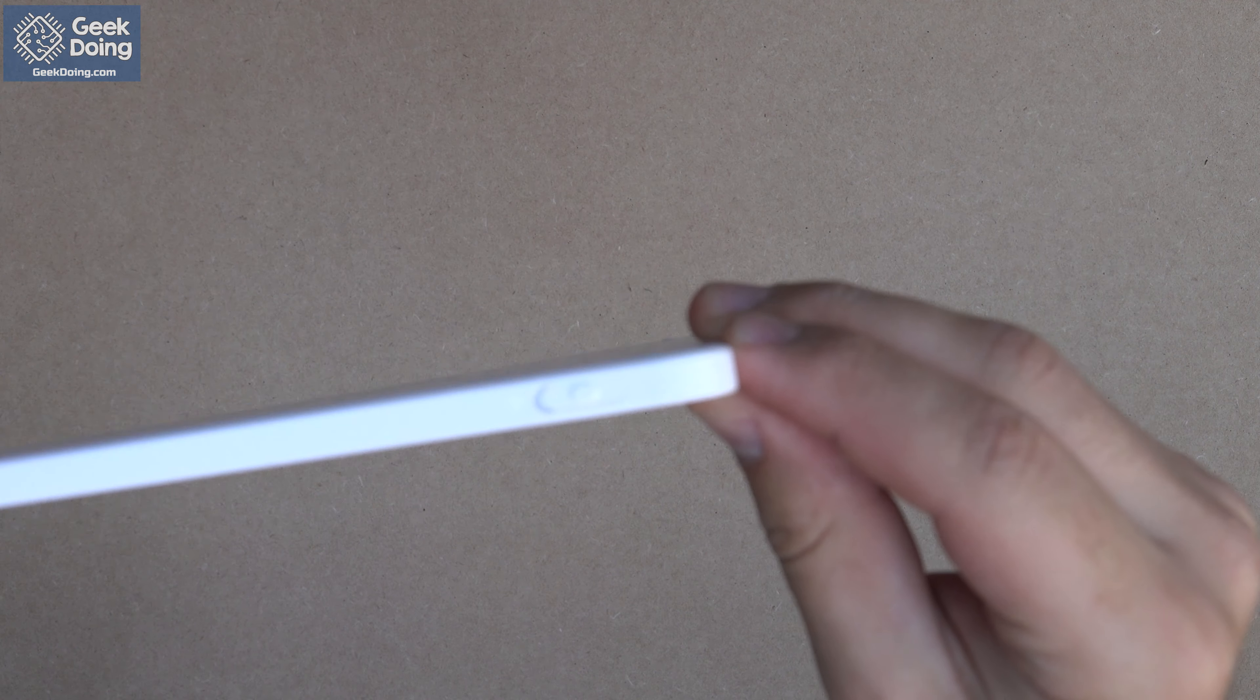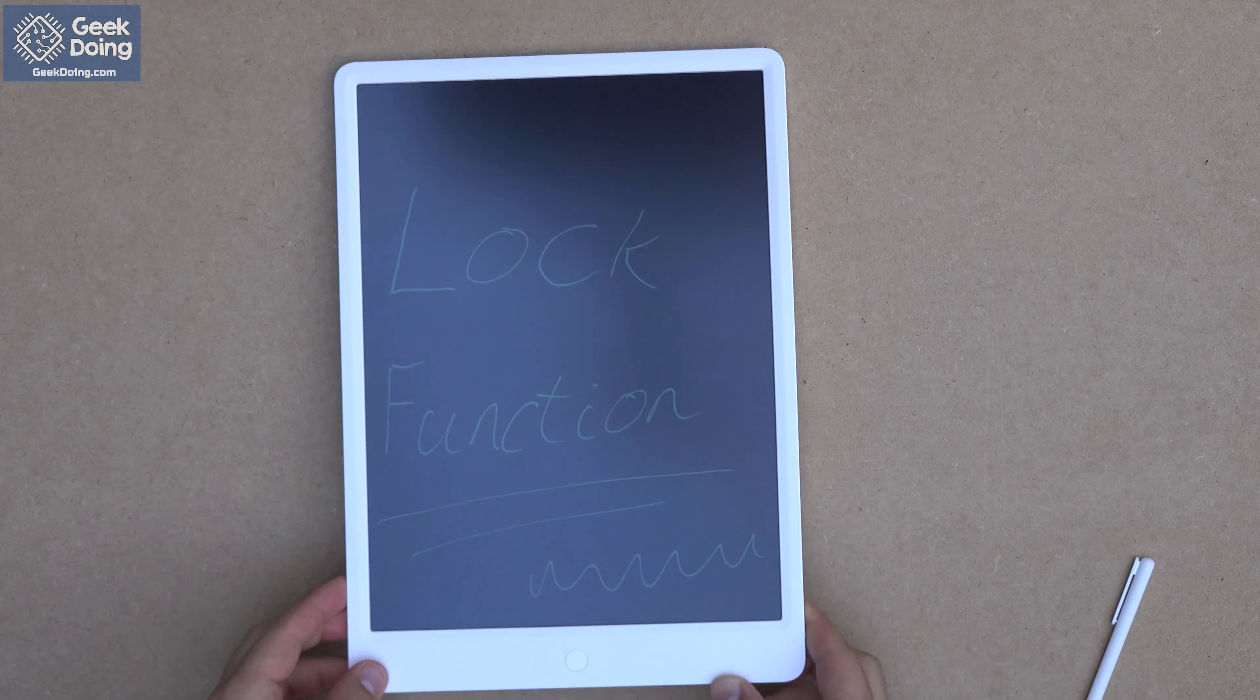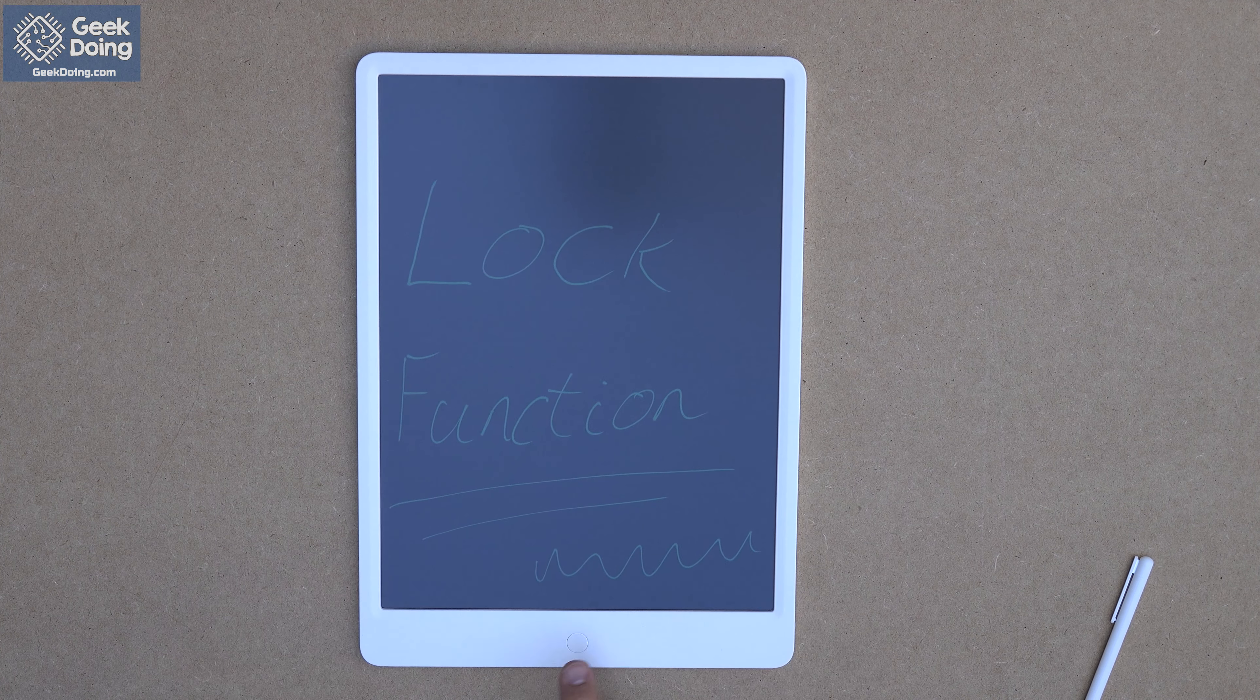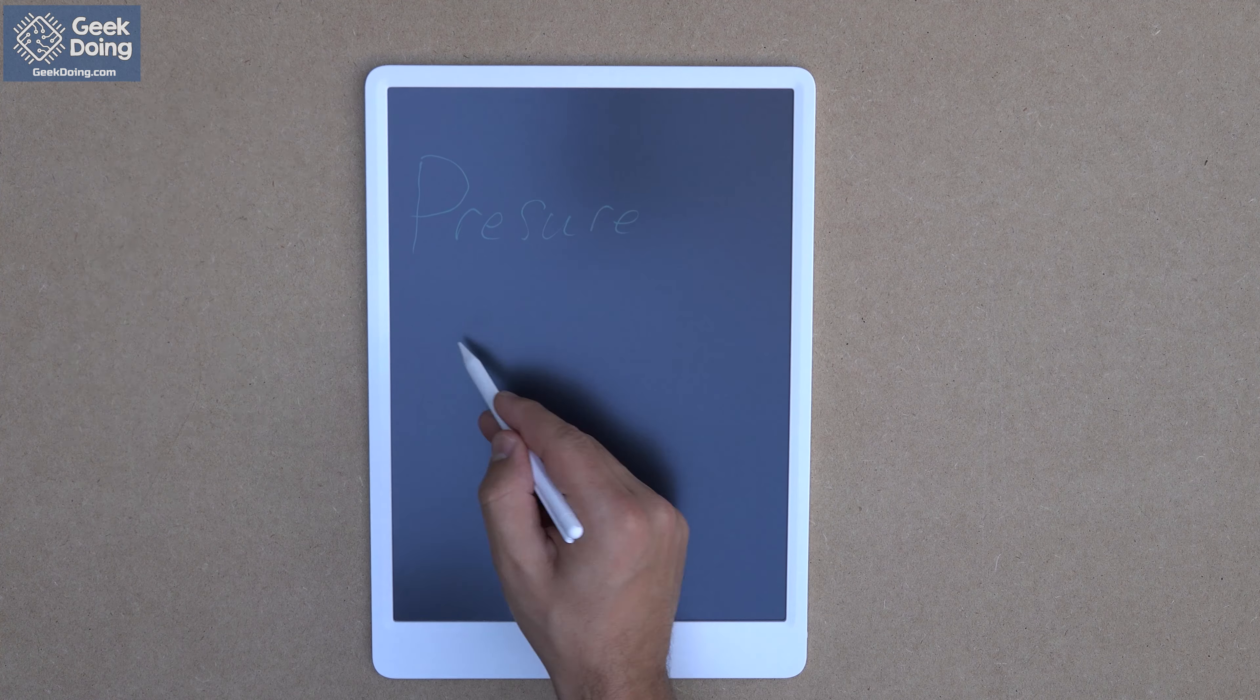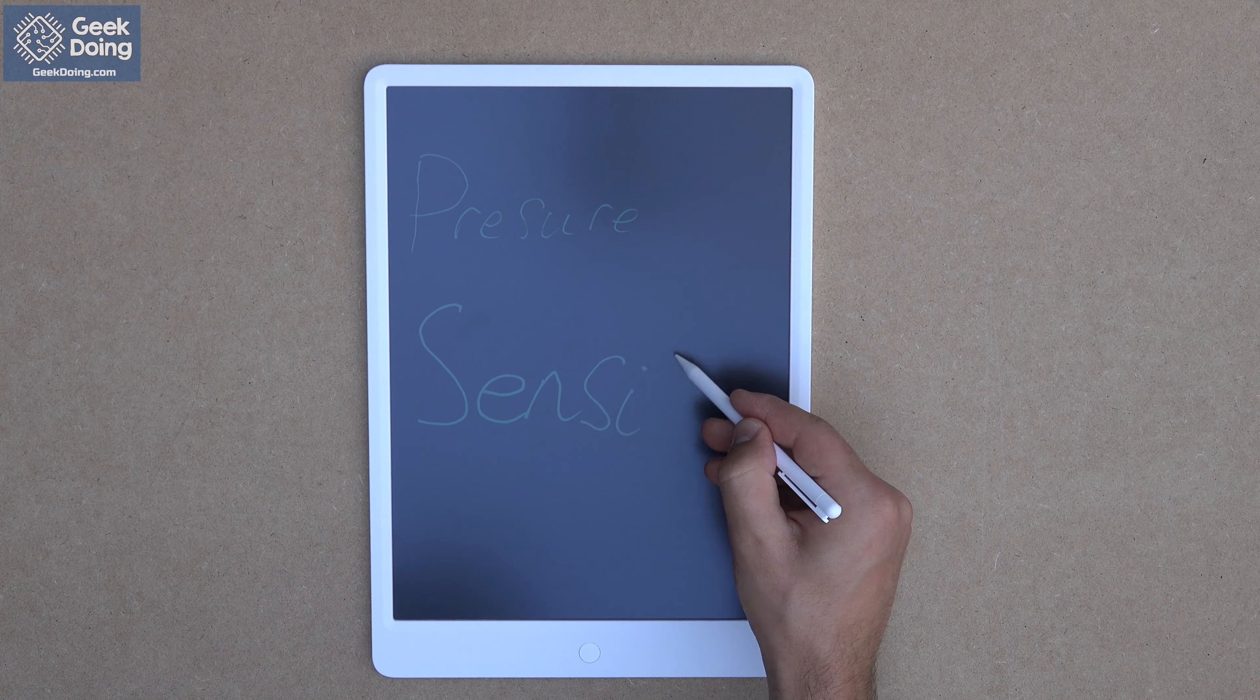And when you're ready, just disable the lock, and the screen can be wiped. The blackboard is pressure sensitive, so soft writing comes out thinner, and hard writing comes out thicker.